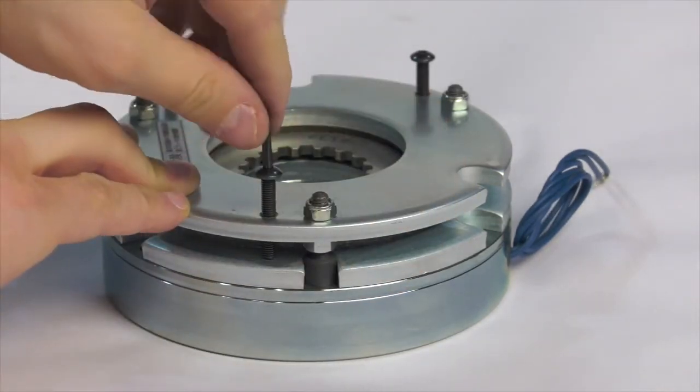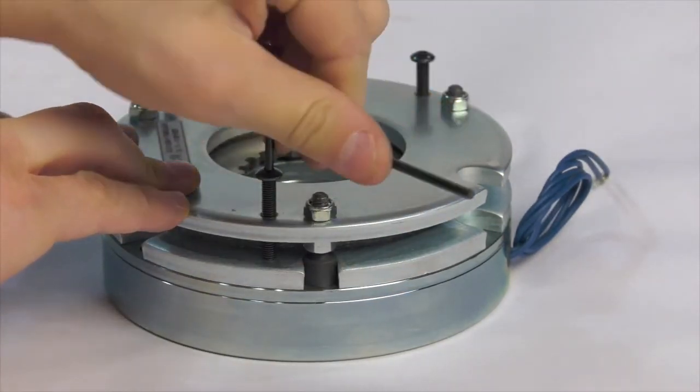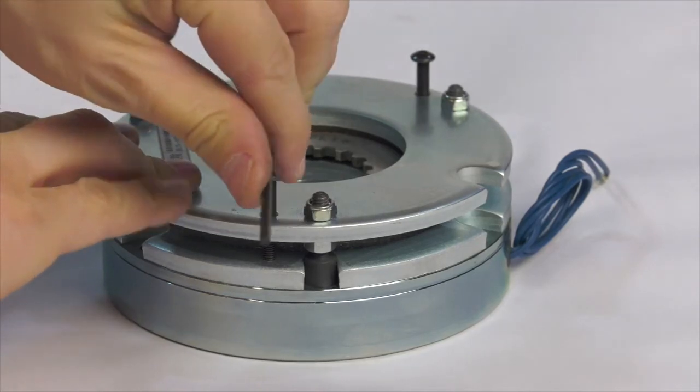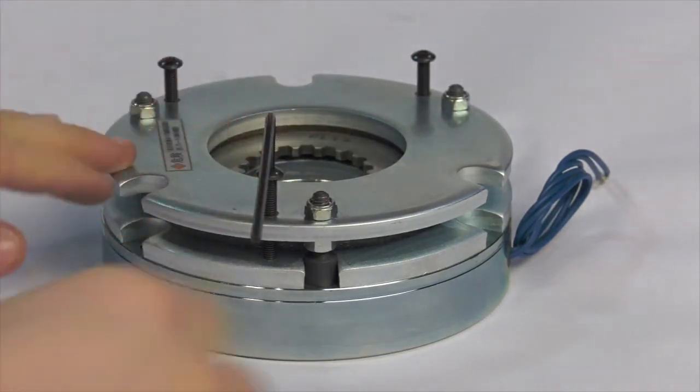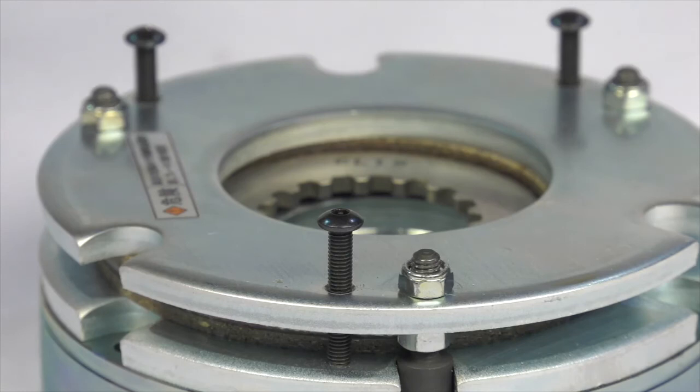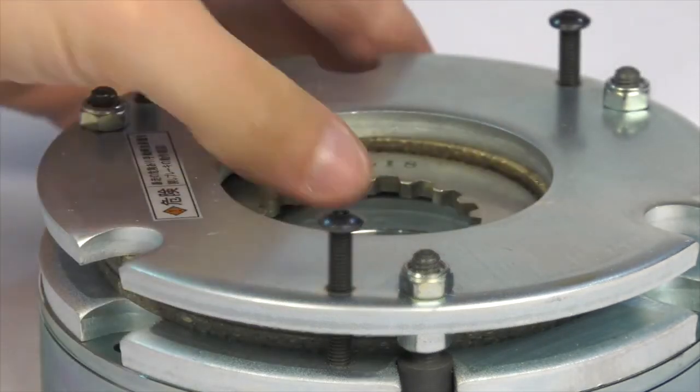Once the screw touches the armature, the brake will release with approximately another 90 degree turn. Take care not to over tighten the screw beyond the point where the armature contacts the field or this will damage the cover plate.